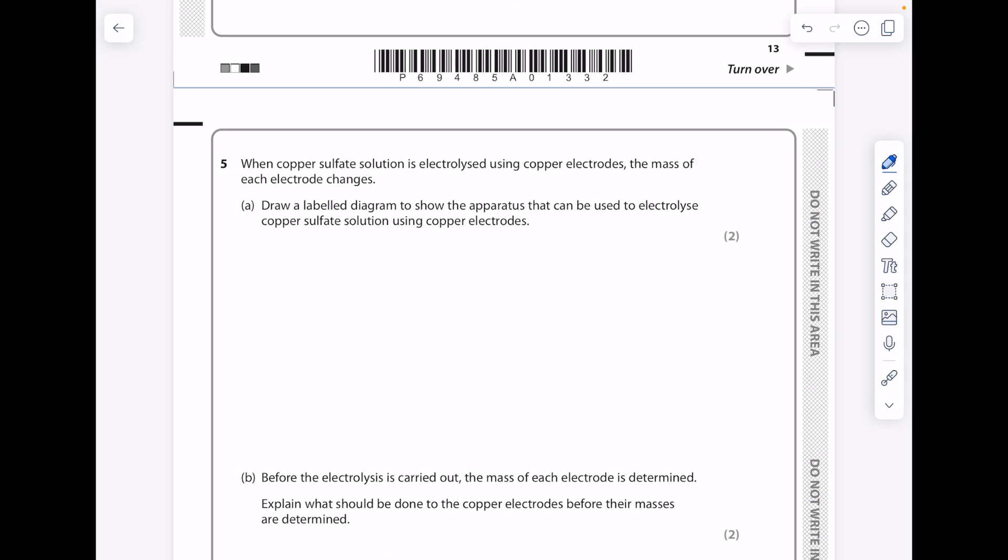When copper sulfate solution is electrolyzed using copper electrodes, the mass of each electrode changes. Draw a labeled diagram to show the apparatus that can be used to electrolyze copper sulfate solution using copper electrodes. So we need our beaker, we need two electrodes, the anode and the cathode. There's the anode, there's the cathode. There's our copper sulfate solution.